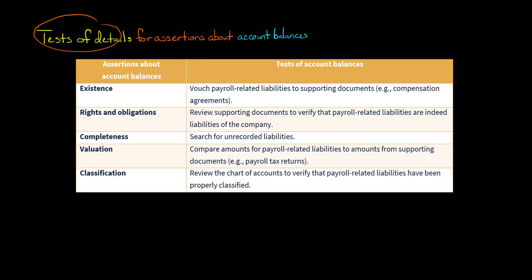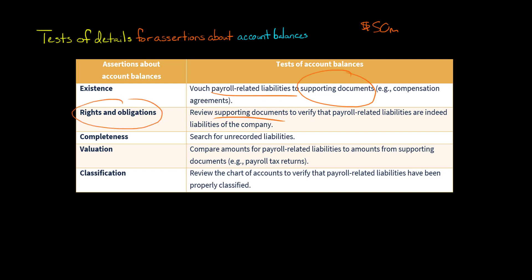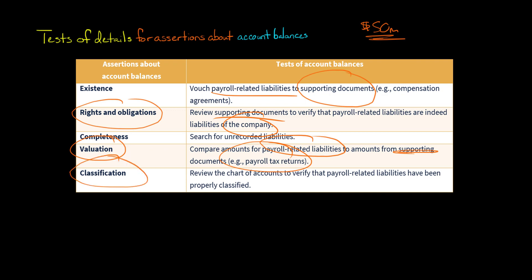The auditor could also perform tests of details for assertions management is making about account balances. For example, if management asserts a specific payroll liability is $50 million, the auditor could test the existence assertion by vouching that liability back to supporting documents. The rights and obligations assertion can be tested by confirming it is a liability of this company, not an employee's obligation. The completeness assertion can be tested by performing a search for unrecorded liabilities. For valuation, the auditor can compare the payroll-related liability amounts to supporting documents such as payroll tax returns. For classification, the auditor could review the chart of accounts to verify that payroll liabilities have been properly classified.